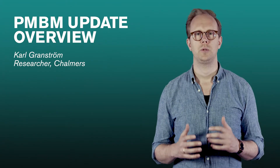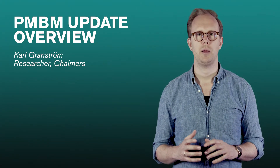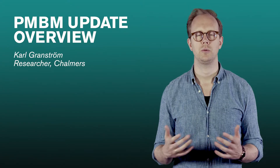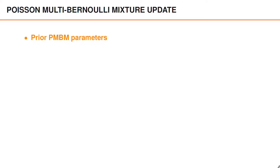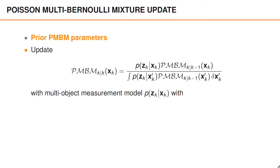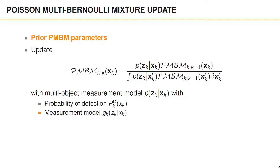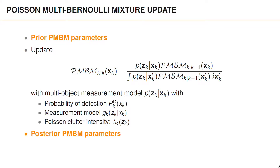Hello. In this video we give an overview of the PMBM update, and in the next video we will give some of the finer details. We start with the parameters of the prior Poisson multi-Bernoulli mixture density, and our goal is the posterior PMBM density for the standard multi-object measurement model with the probability of detection, a measurement model G, and Poisson clutter with intensity lambda_C. We focus on the parameters of the posterior Poisson multi-Bernoulli mixture density.